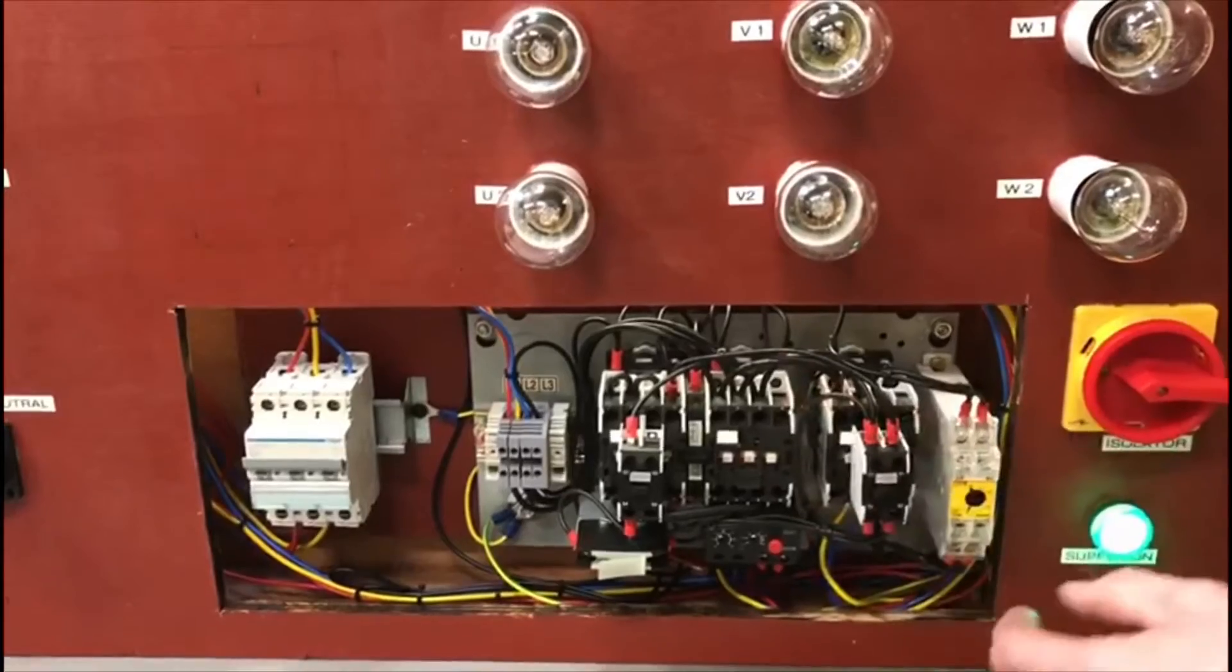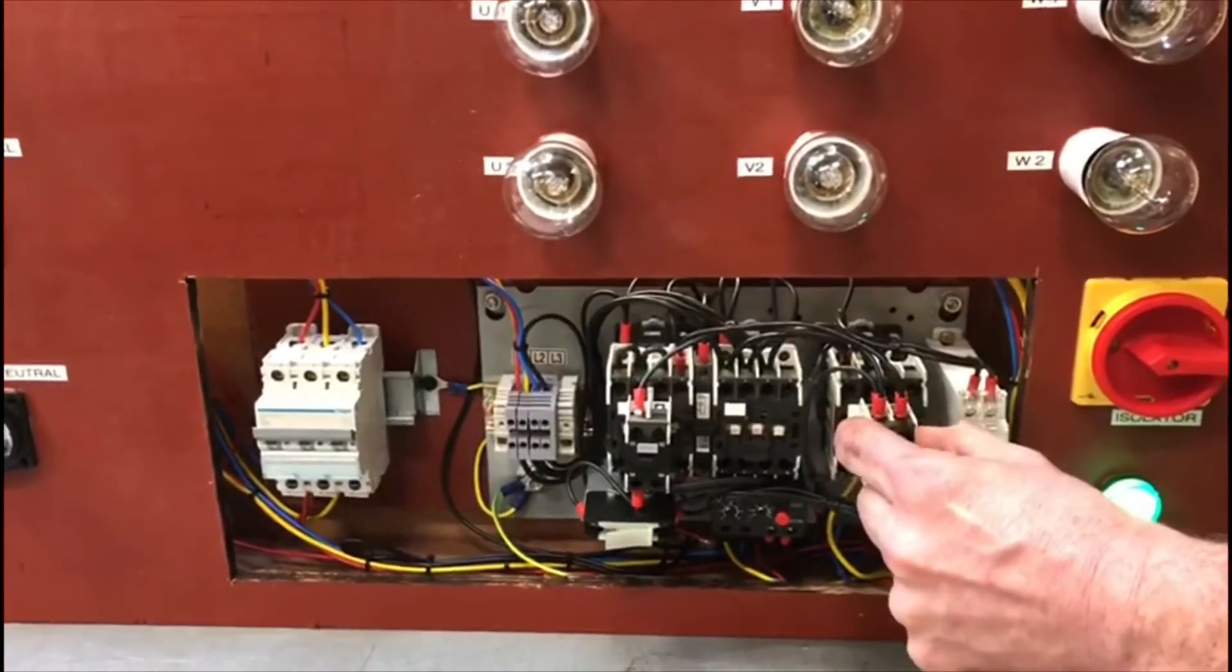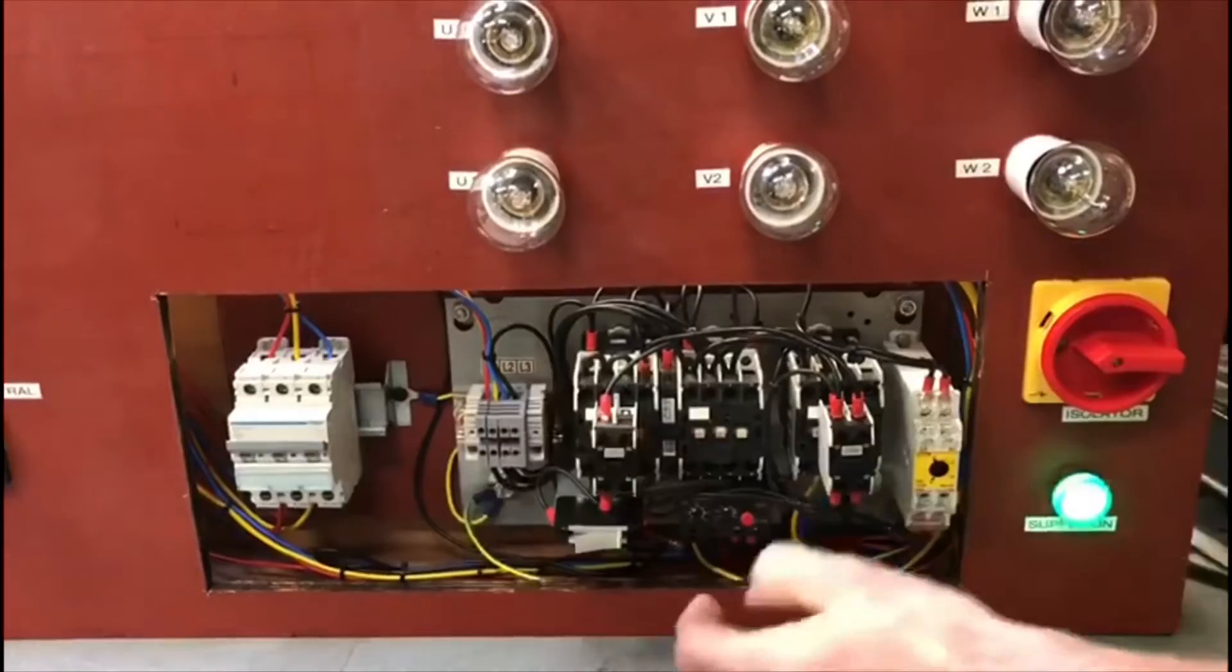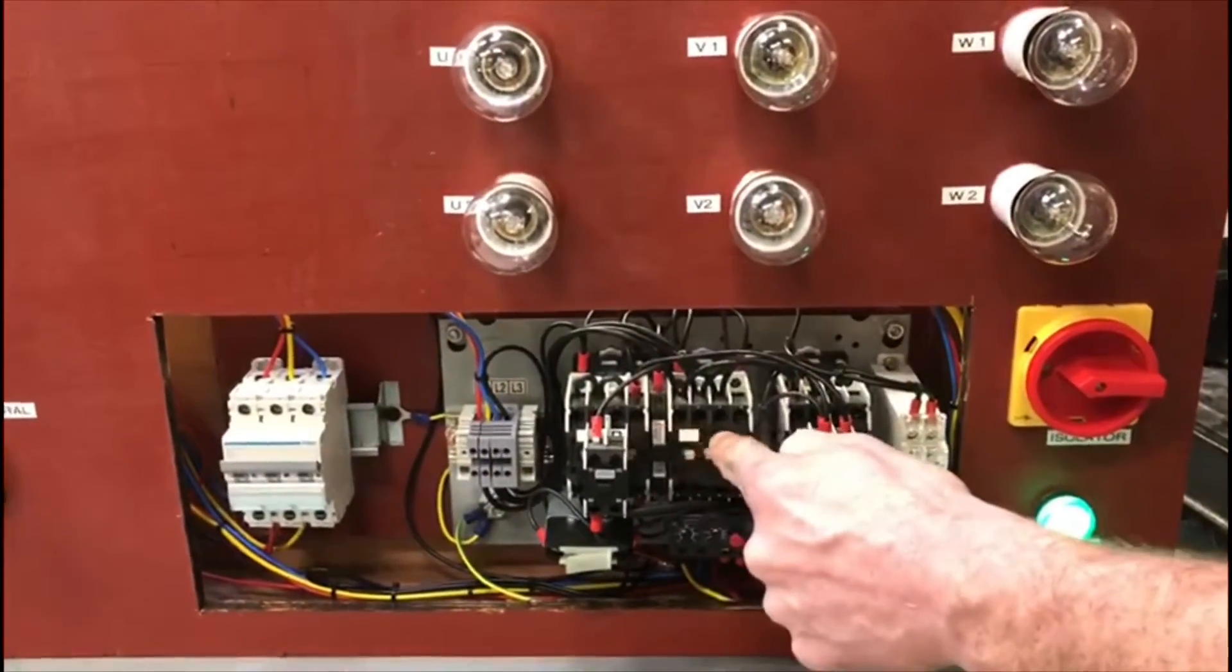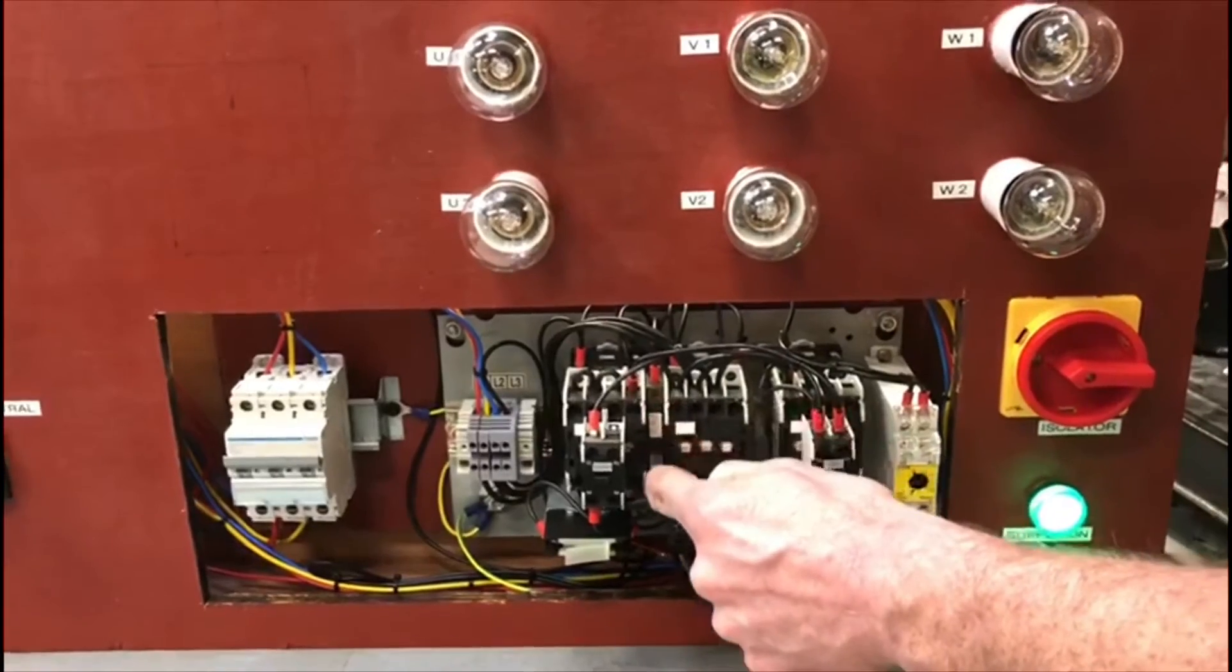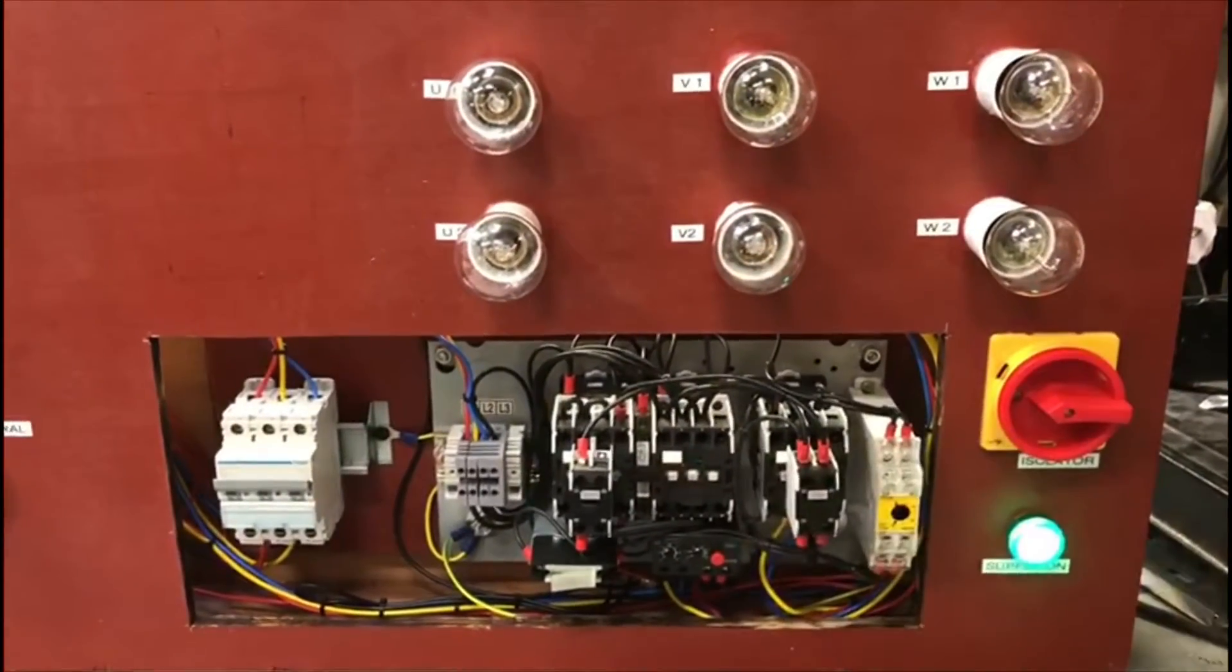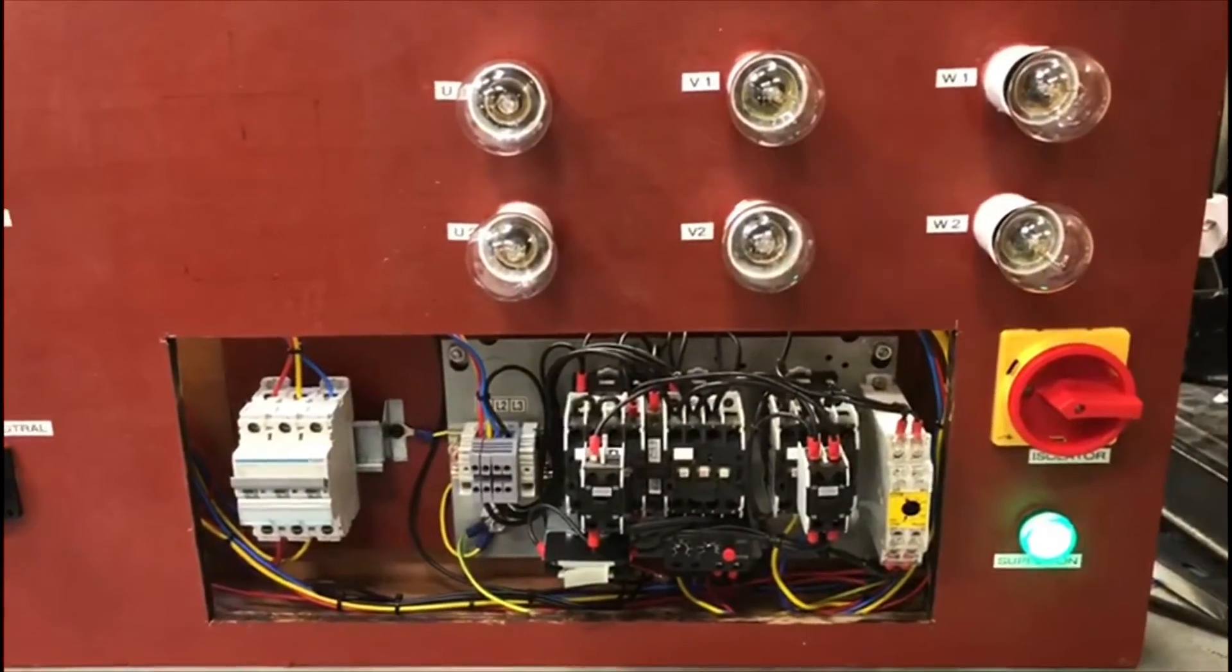The main contactor will also remain energized and remain pulled in at all times. So I'll just say that again: we've got the main contactor. As we start it, this one pulls in. After about 20 seconds due to the timer, this one will pull out and this one will pull in. There's an interlock in the middle to prevent both of them being energized at the same time.